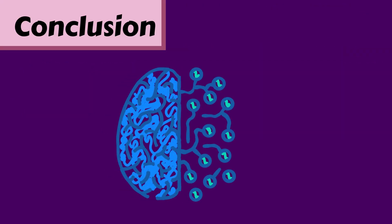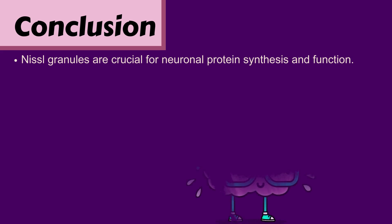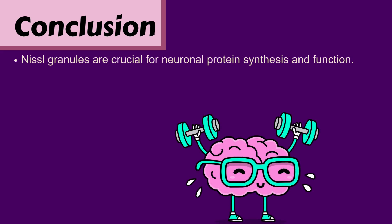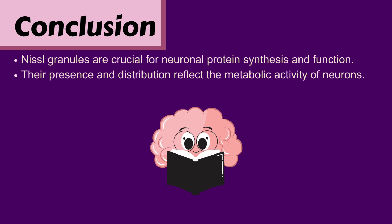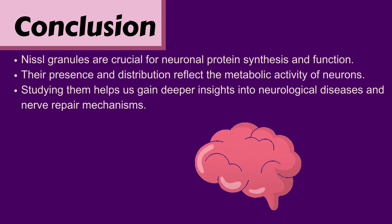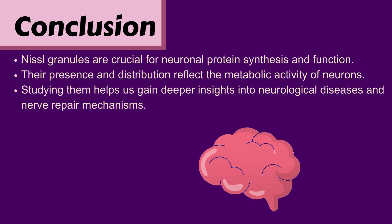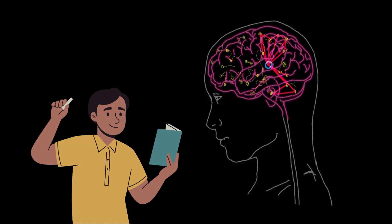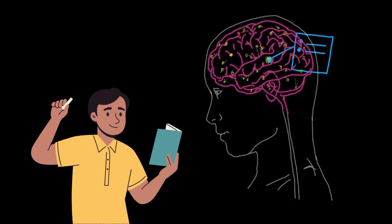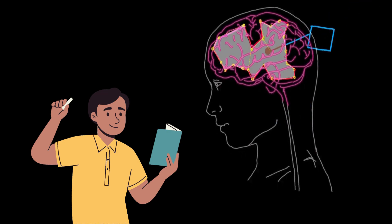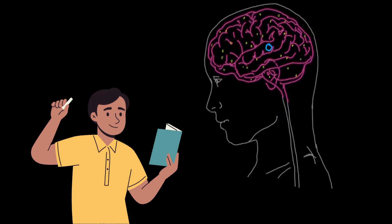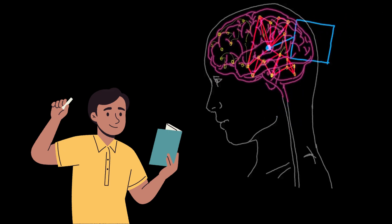Conclusion. Nissl granules are crucial for neuronal protein synthesis and function. Their presence and distribution reflect the metabolic activity of neurons. Studying them helps us gain deeper insights into neurological diseases and nerve repair mechanisms. That brings us to the end of our presentation. I hope you found this session insightful. Thank you for your time.